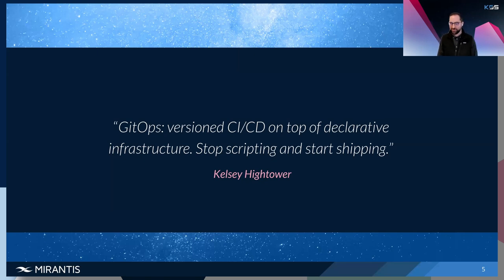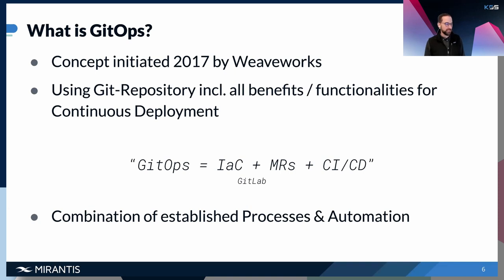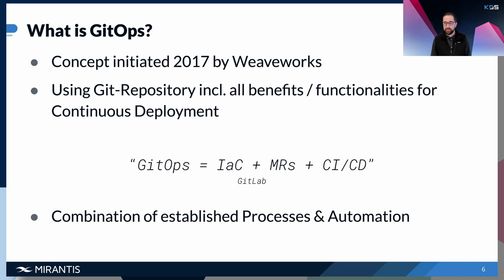Let's start with a quote from Kelsey Hightower. From my point of view, this quote definitely describes GitOps very well: it's versioned CICD on top of declarative infrastructure — stop scripting and start shipping. GitOps is a concept introduced back in 2017 by WeaveWorks, the creators of Flux, and it uses the Git repository as the single source of truth with all the benefits of a version control system. Continuous deployment is key here.